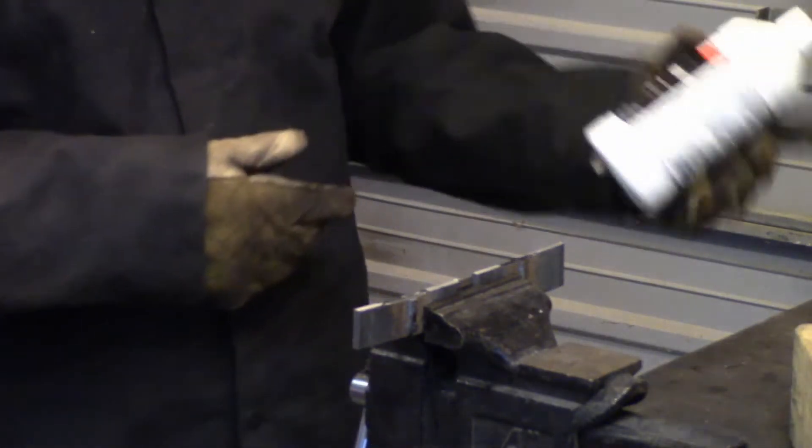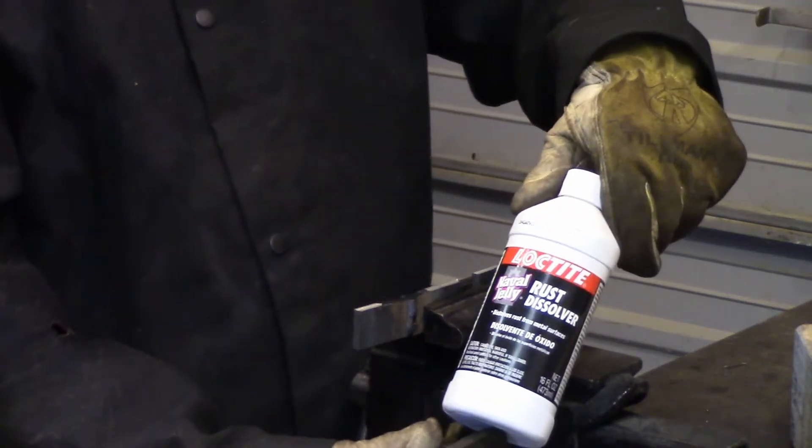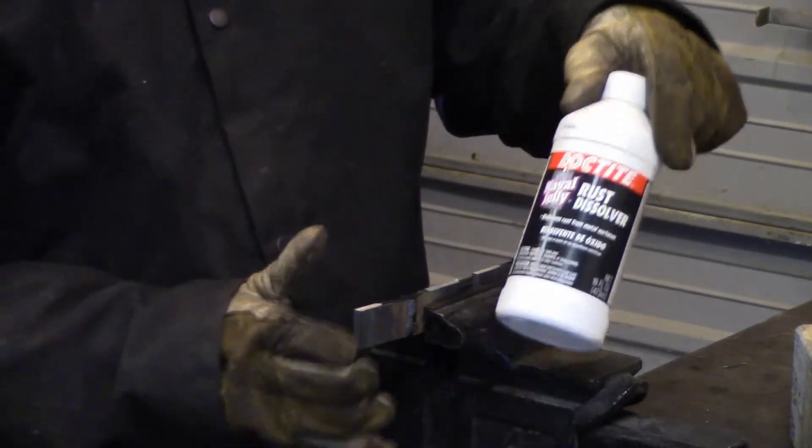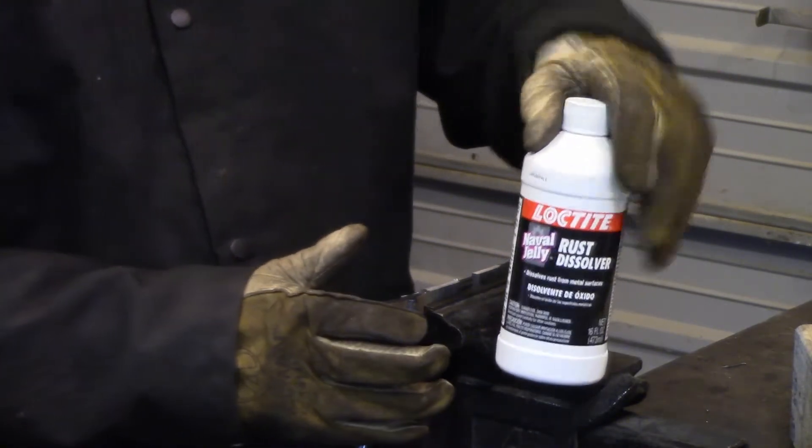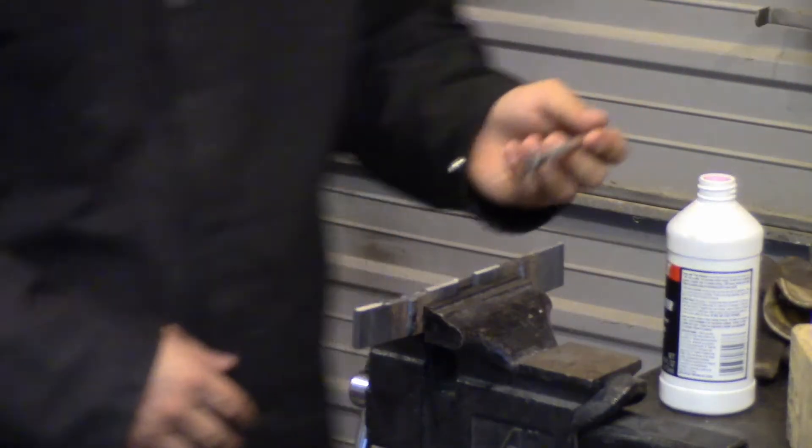Shake up some of the naval jelly. In case you guys haven't seen it yet, I'm using just your regular Loctite naval jelly for etching of regular mild steels.